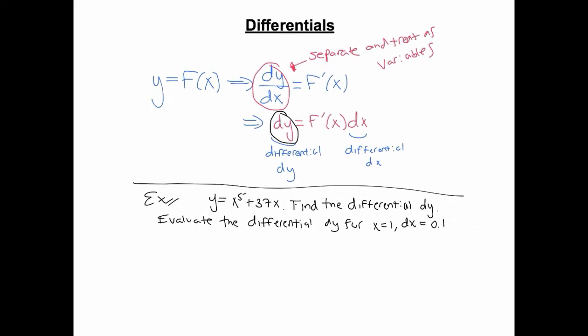So in terms of computation, this is actually not hard to do. The differential dy would just be, now you can find dy/dx and then swing over this dx like we did above. But you could just in one step isolate the dy. So dy, and treat this just like you're taking the derivative. dy equals 5x to the fourth plus 37, but then you need your dx. So there's the differential dy.